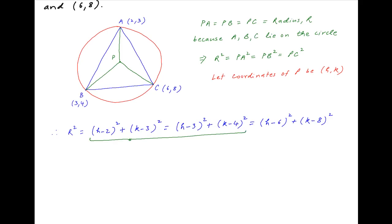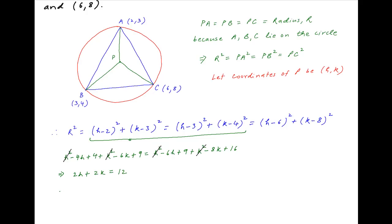Using the first equality, we get H² − 4H + 4 + K² − 6K + 9 = H² − 6H + 9 + K² − 8K + 16. The H² and K² terms cancel, and this equation simplifies to 2H + 2K = 12, which implies H + K = 6. Let's call this result 1.